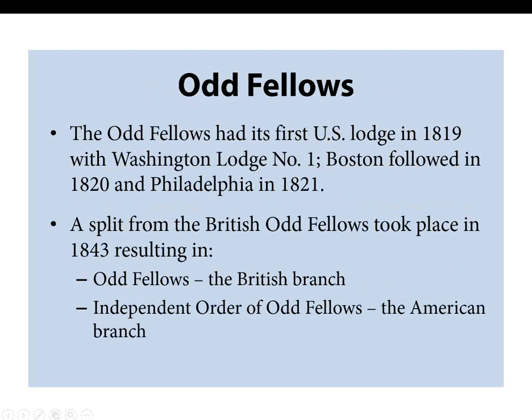The Odd Fellows had its first U.S. lodge in 1819 with Washington Lodge number one. Boston followed in 1820 and Philadelphia in 1821. Originally a British organization, there was a huge split around 1843 resulting in two branches: the Odd Fellows is the British branch, and the Independent Order of Odd Fellows is the American branch. If you see IOOF, that's the American branch. The schism, unfortunately, was over the British branch having allowed an African American lodge to form, which the Americans at the time did not agree with.